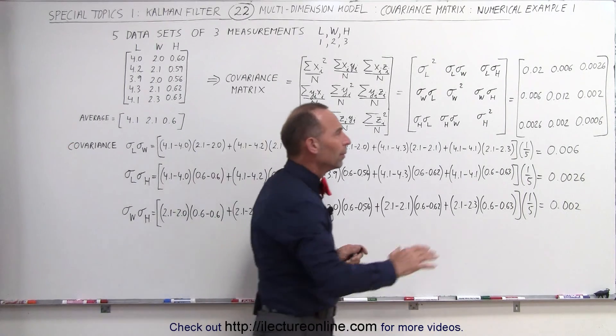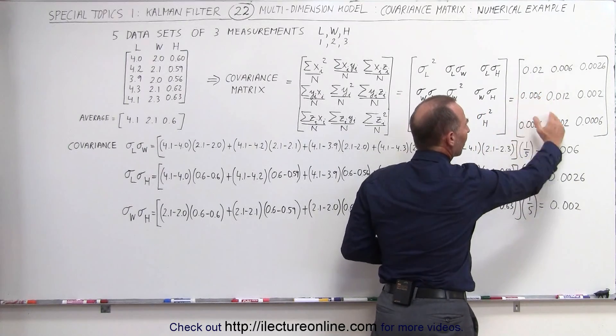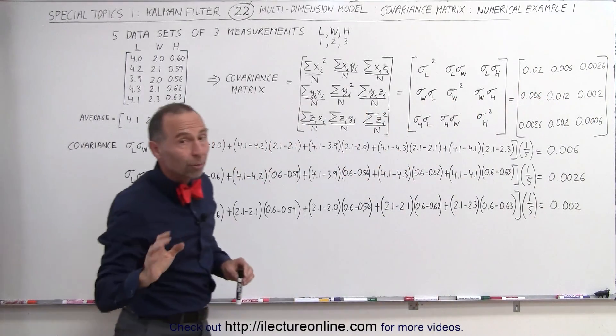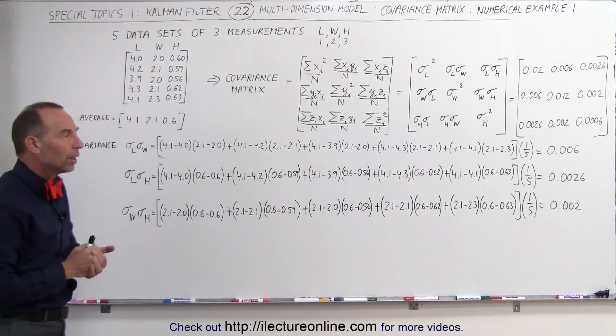Now, there are some particulars about the covariance portion of the matrix. The off diagonal elements, those sometimes can be negative, and I'll show you an example where they will be negative and what that actually means as well.